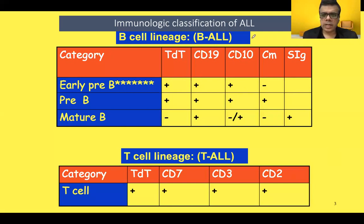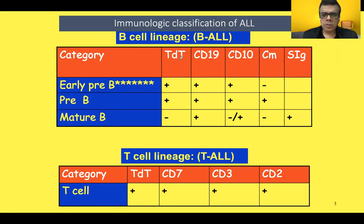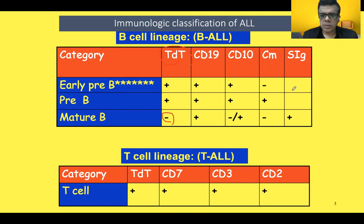Coming to the immunological classification of ALL, B cell ALL is divided into early pre-B, pre-B, and mature B. These types differ in certain immunological characteristics. The most important is TdT — terminal deoxynucleotide transferase — an enzyme that is present in early pre-B and pre-B types, but absent in mature B ALL.